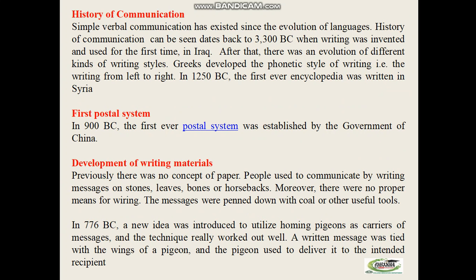What is the history of communication? From when has communication started? Simply, verbal communication has existed since the evolution of languages. History of communication dates back to 3300 BC when writing was invented and used for the first time in Europe. After that, there was an evolution of different kinds of writing styles. Greeks developed the phonetic style of writing — writing from left to right. In 1250 BC, the first ever encyclopedia was written in Syria. In 900 BC, the first ever postal system was established by the government of China.